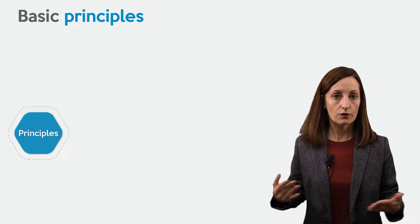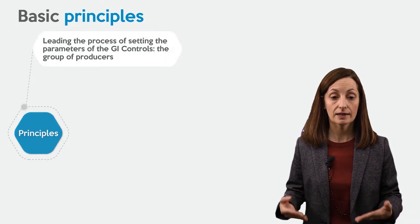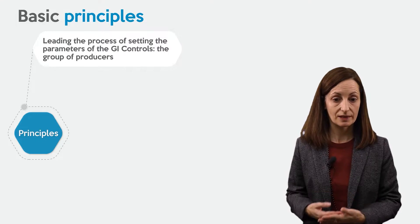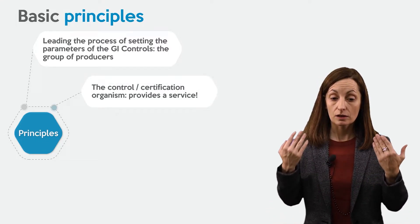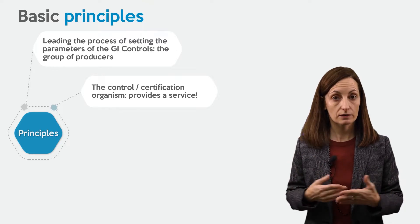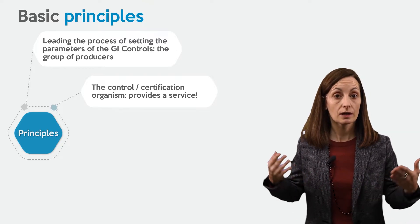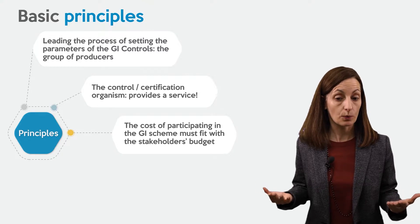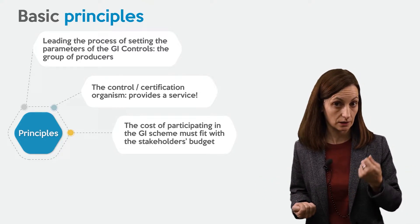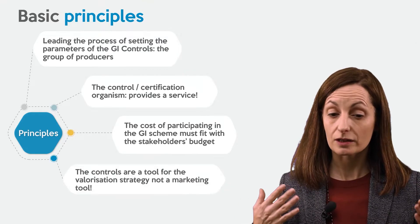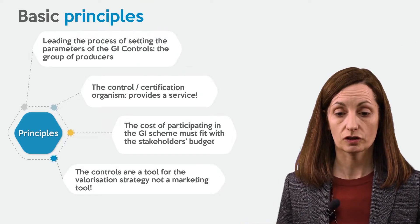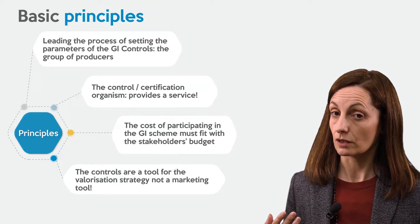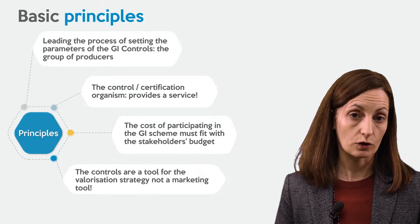Some basic principles. First of all, it is the group of producers that has the lead in the process of setting the parameters of the GI controls. Secondly, controls or certification organisms will provide a service — they don't have to force producers to do something. The cost of participating in the GI scheme must also fit within the stakeholder budget. Controls are a tool for the valorisation strategy, not necessarily a marketing tool, so you need to avoid marketing or labelling with multi-logos, including the logos of certification bodies.